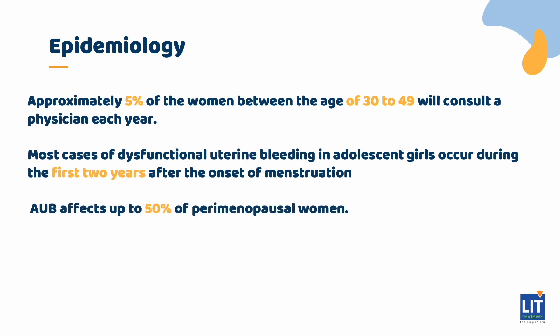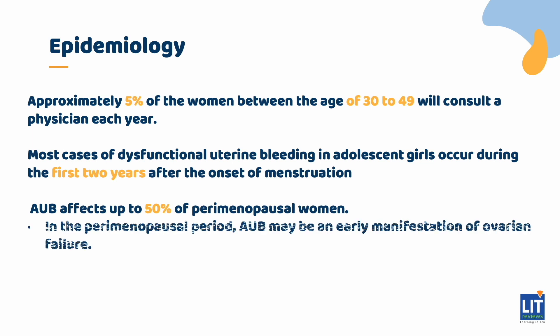AUB affects up to 50% of perimenopausal women. In the perimenopausal period, AUB may be an early manifestation of ovarian failure, causing decreased hormone levels or responsiveness to hormones, thus also leading to anovulatory cycles.